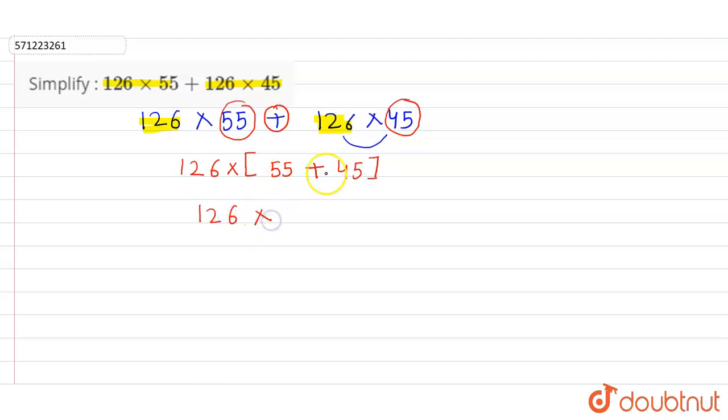We can simply add 55 and 45. So 55 and 45 is 100, and then 126 × 100 is 126 with double zero, so this is the answer: 12,600.